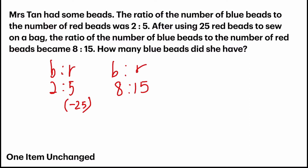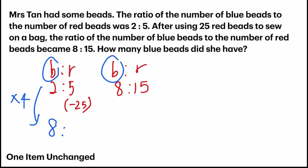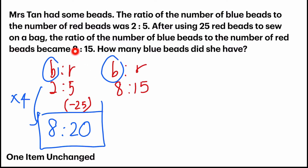Let's take a look at the blue beads — it's 2 units here and it's 8 units here. It should be equivalent because nothing was done to it. So our first task is to change the blue beads to an equivalent ratio, meaning I have to change it to 8 units. To do so, I need to multiply by 4. So 5 times 4 gives me 20. Now let's zoom in to red beads: before it was 20 units, after it was 15. So 20 minus 15 gives me 5 units.